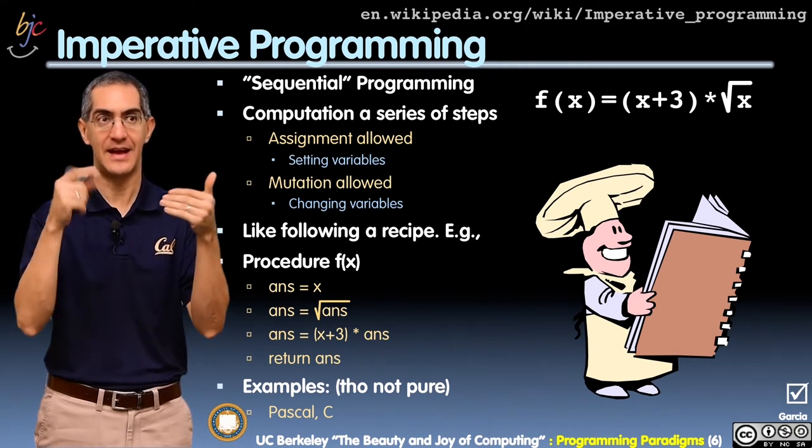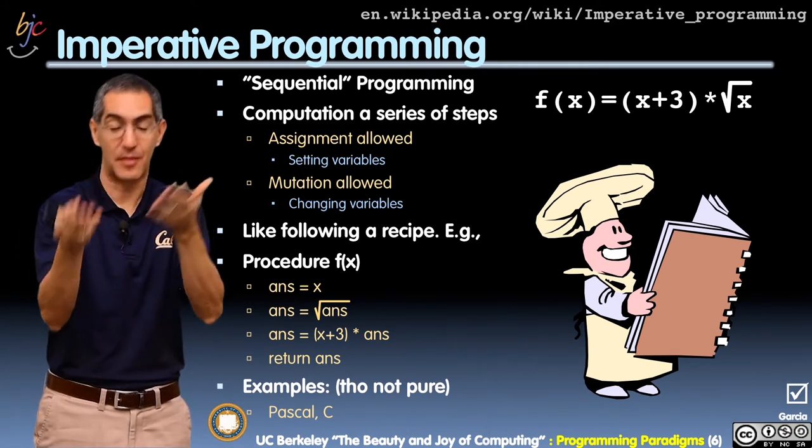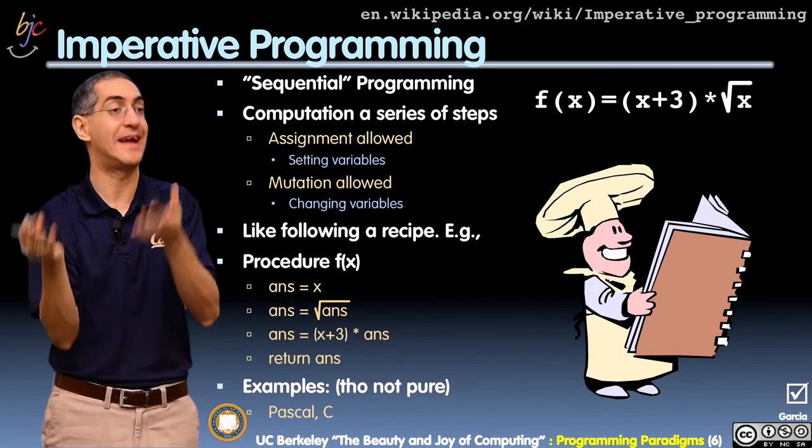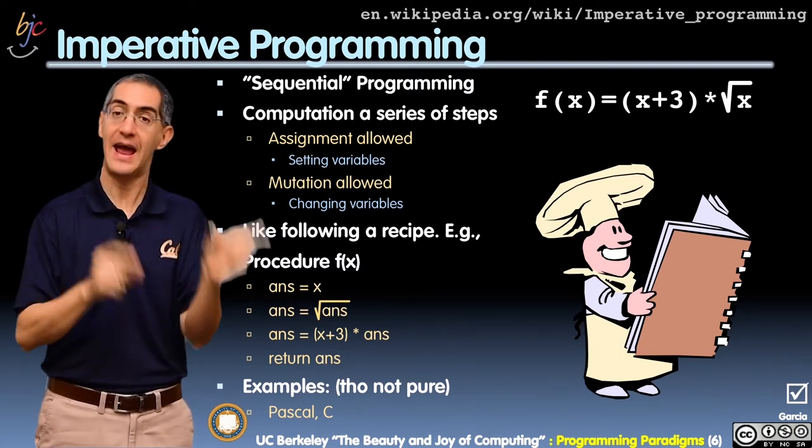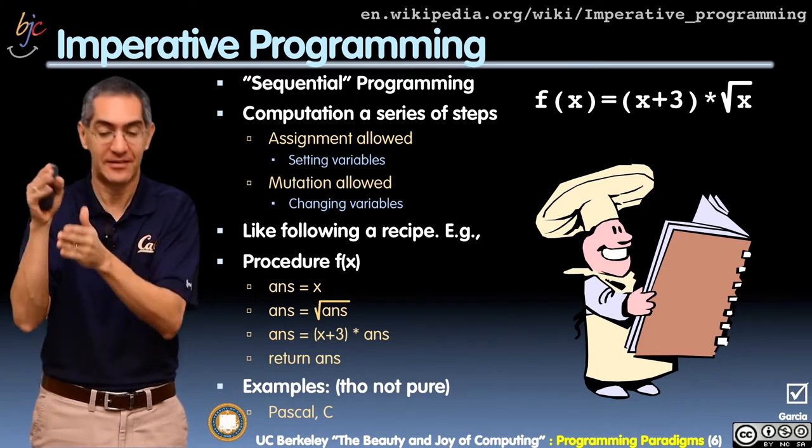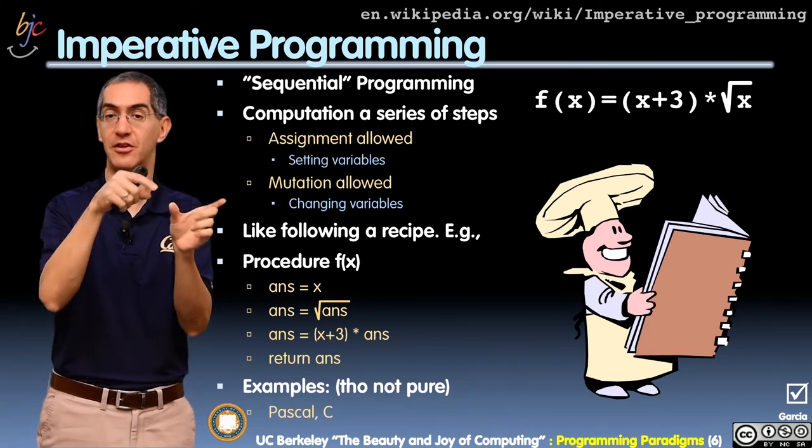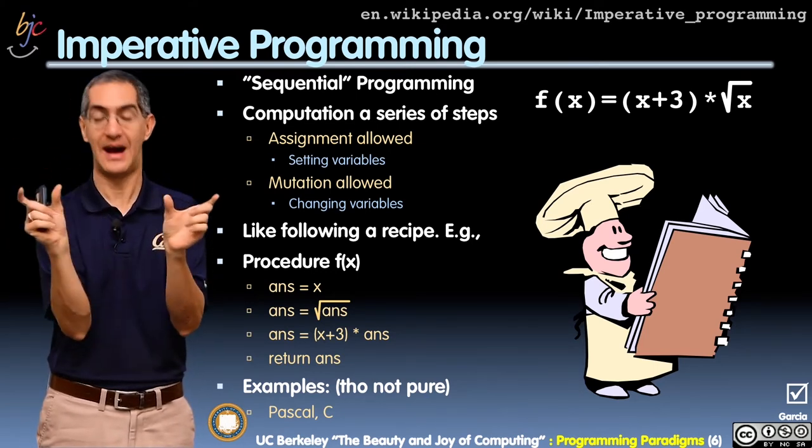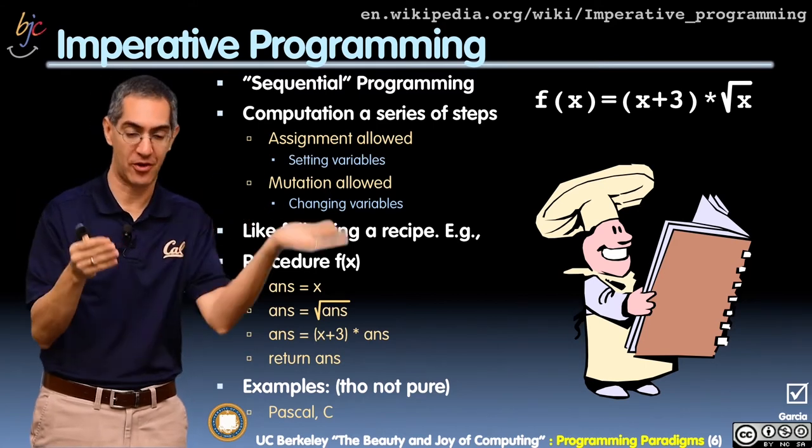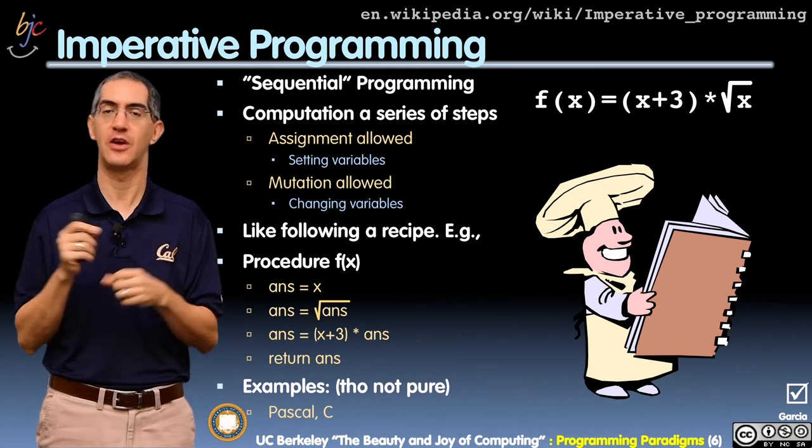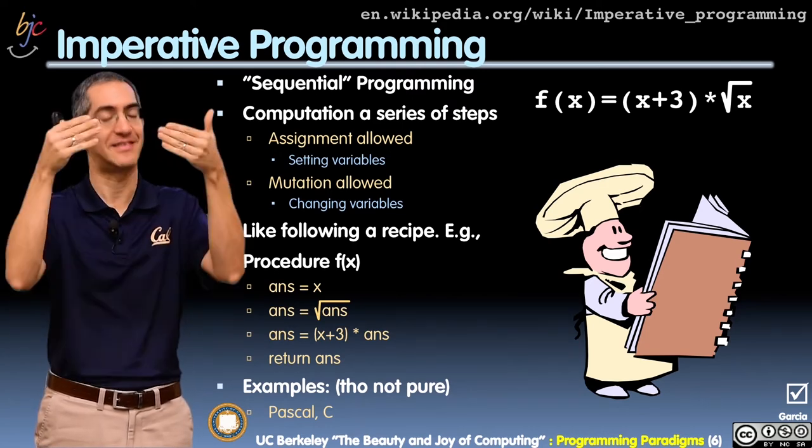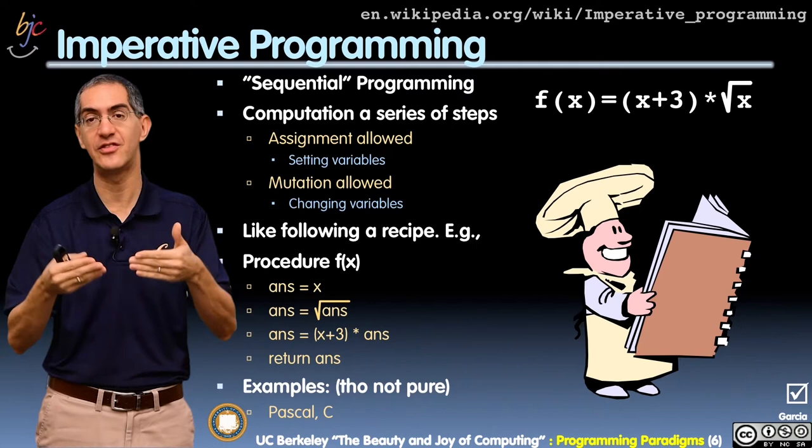Because remember, answer was x a second ago. So now answer is square root of x. I'm working my way through my computation. Answer equals (x + 3) times answer. And now, all of a sudden, I'm done with my computation. If I return answer, I'm returning the quantity (x + 3) times square root of x. That's a way to have some assignments, some stages.